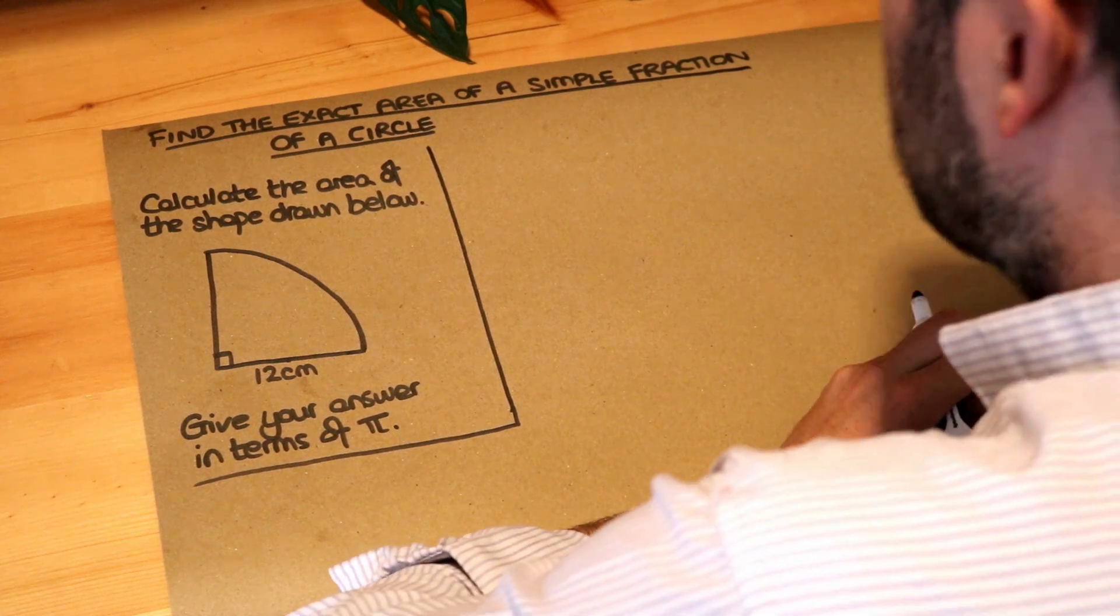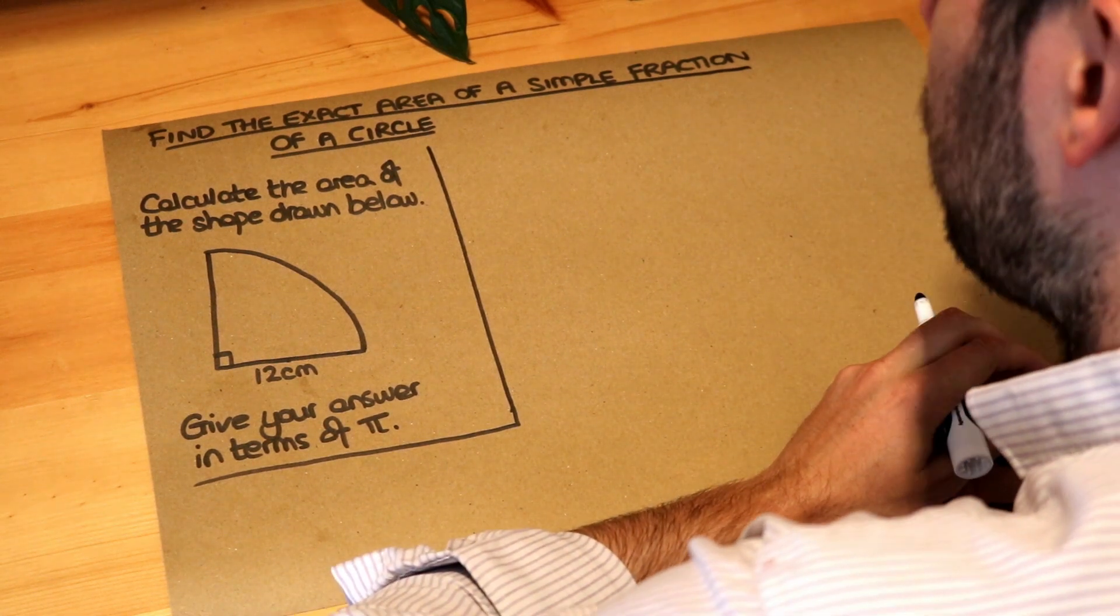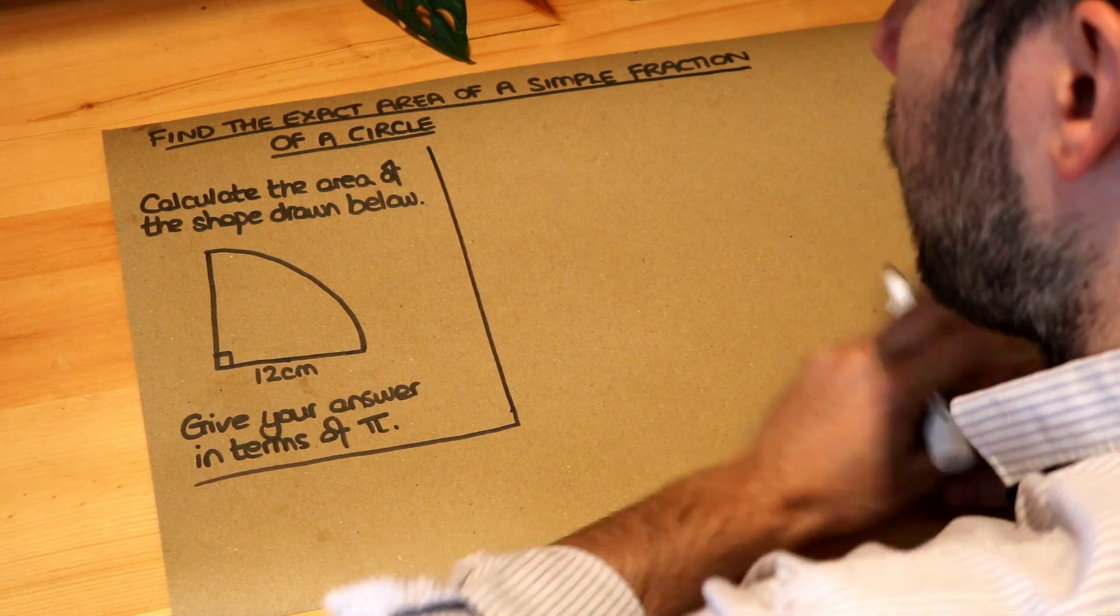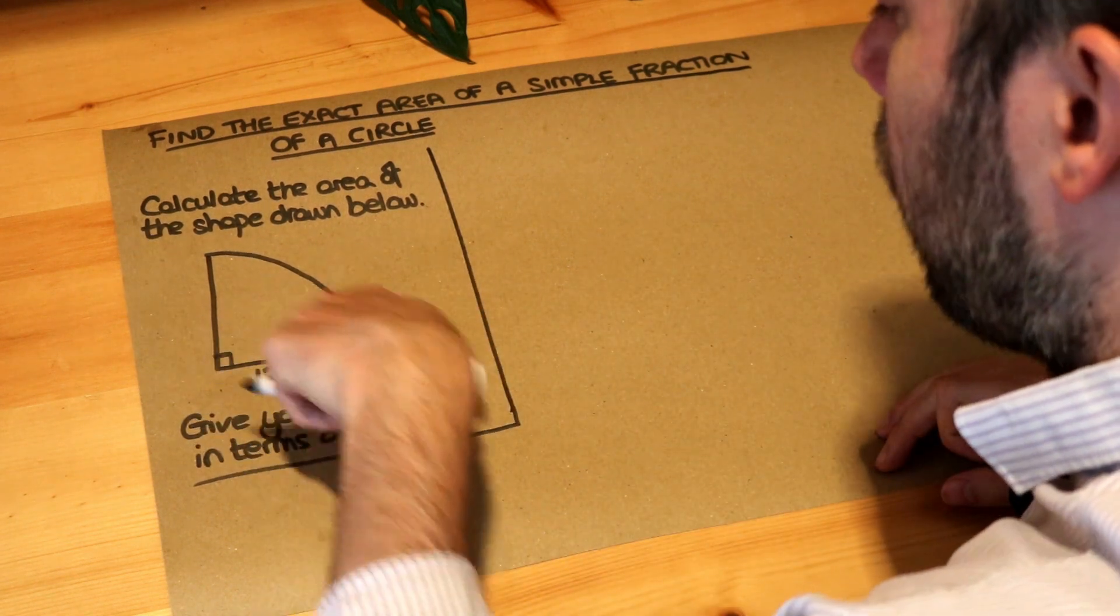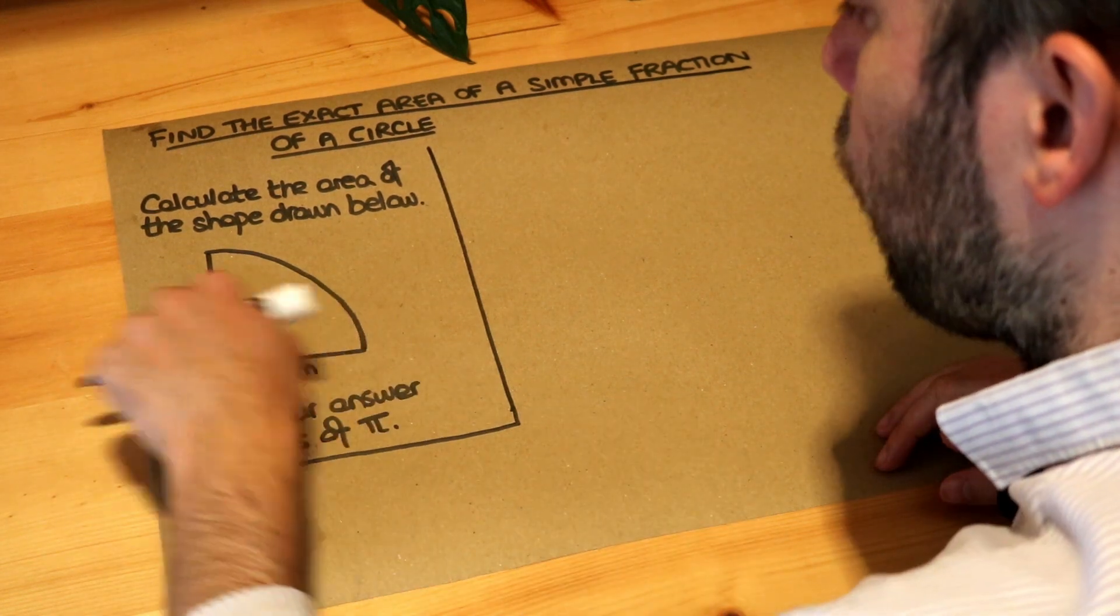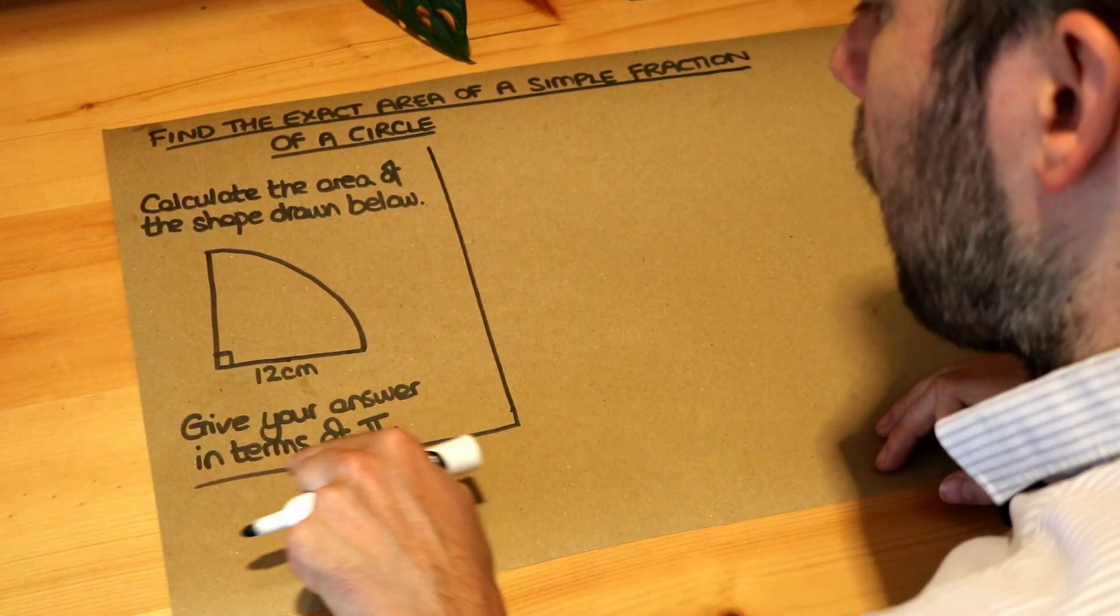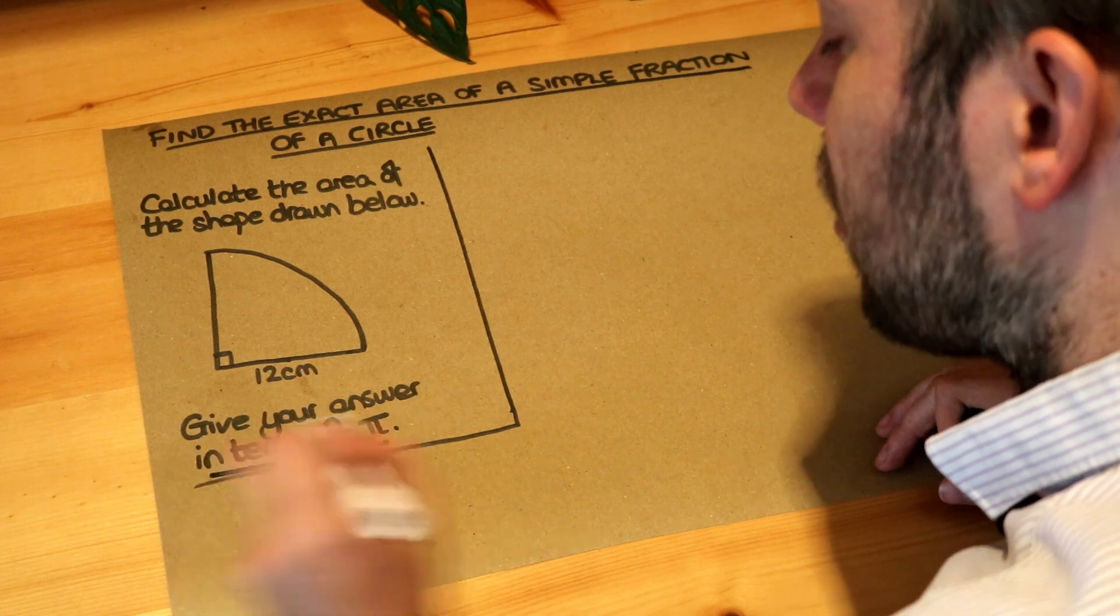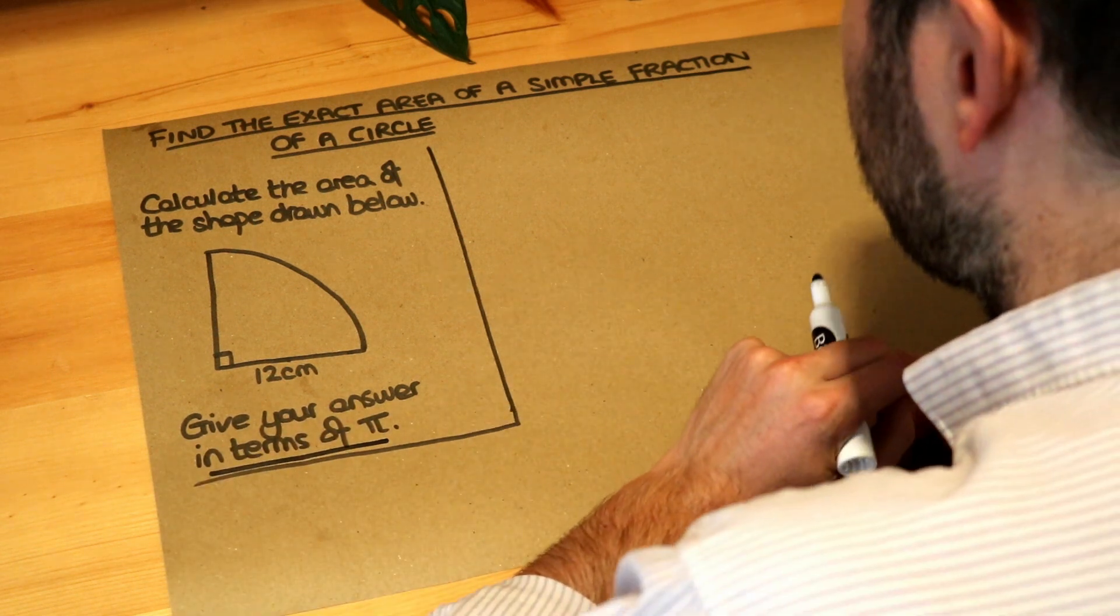Hello and welcome to this Dr Frost video on finding the exact area of a simple fraction of a circle. We want to calculate the area of this quarter of a circle. This is a quarter of a circle. If we had four of these we'd make a full circle. And we want to give our answer in terms of pi. That's the kind of thing that's different from the previous video.